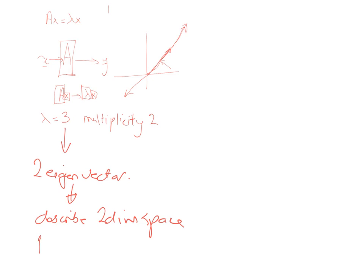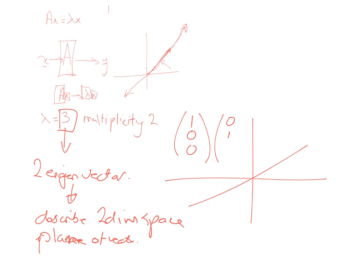In other words, there's now going to be a plane of vectors that just get multiplied. Imagine I've now got my 3 dimensions, and let's say the vectors ended up being (1,0,0) and (0,1,0).